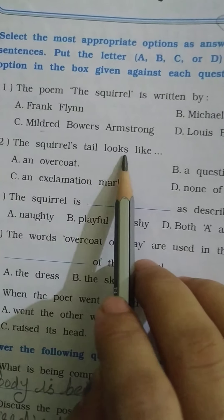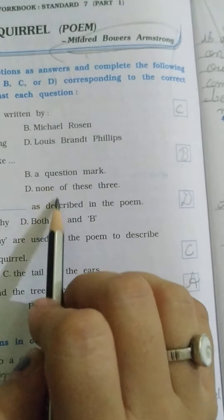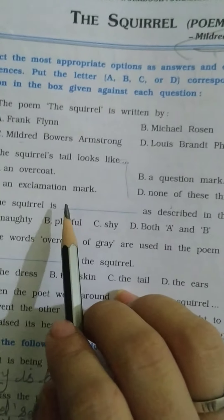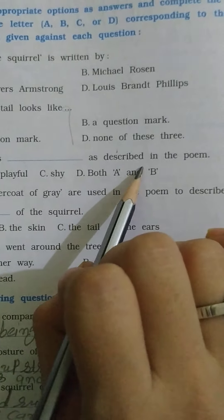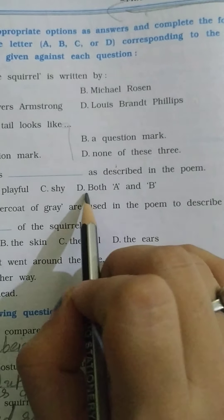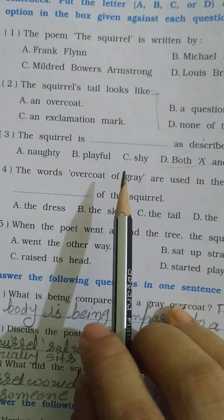The squirrel's tail looks like a question mark. The squirrel is blank as described in the poem: both A and B. Naughty and playful.